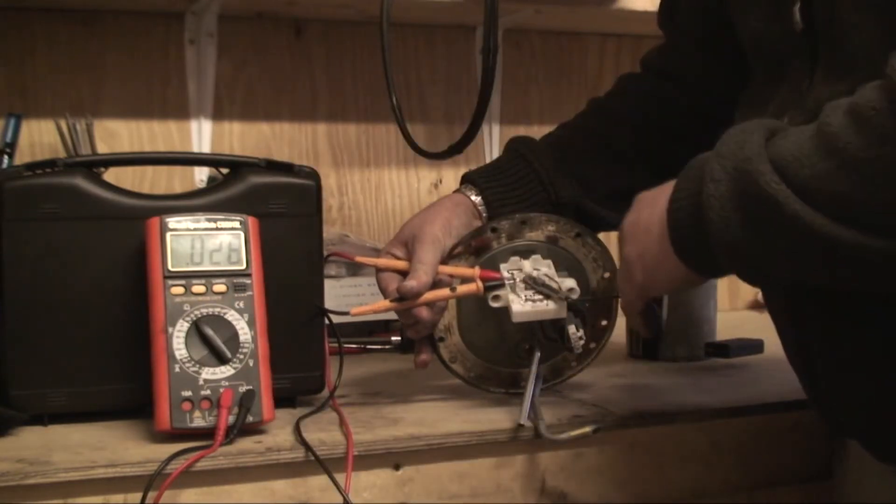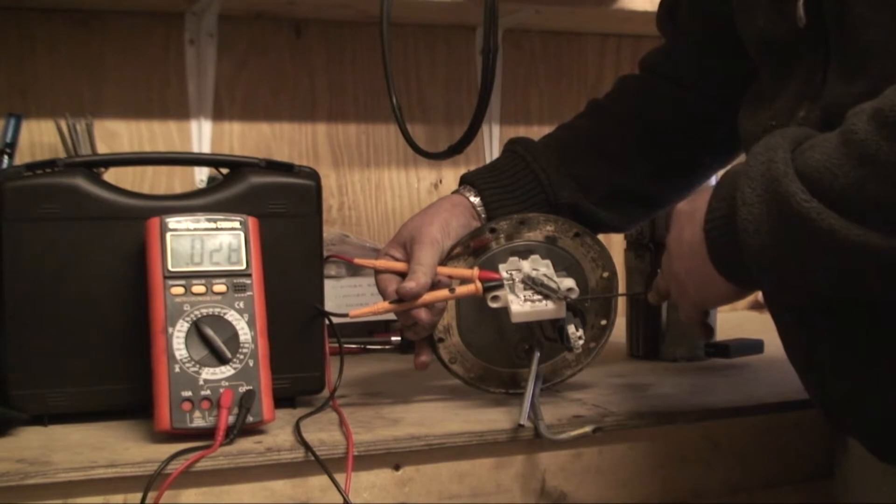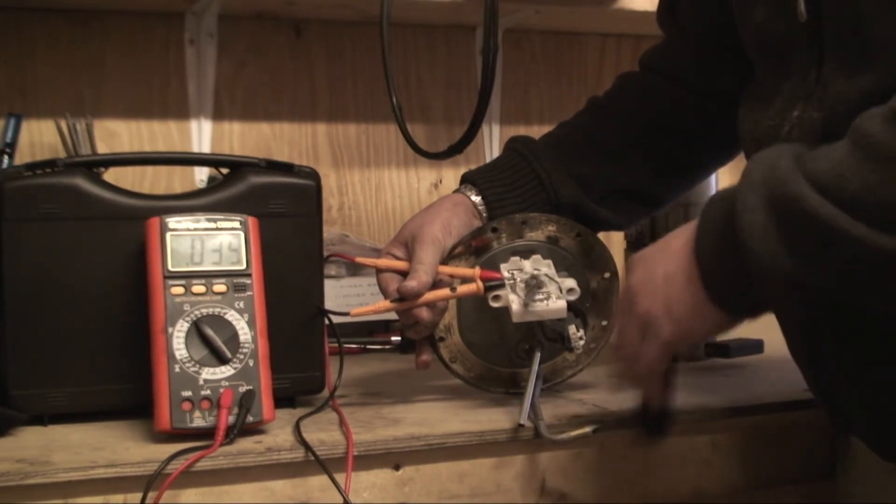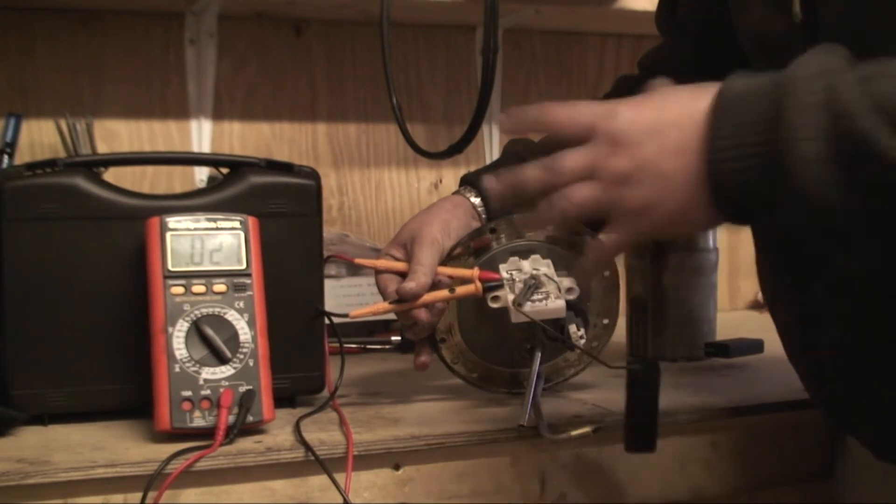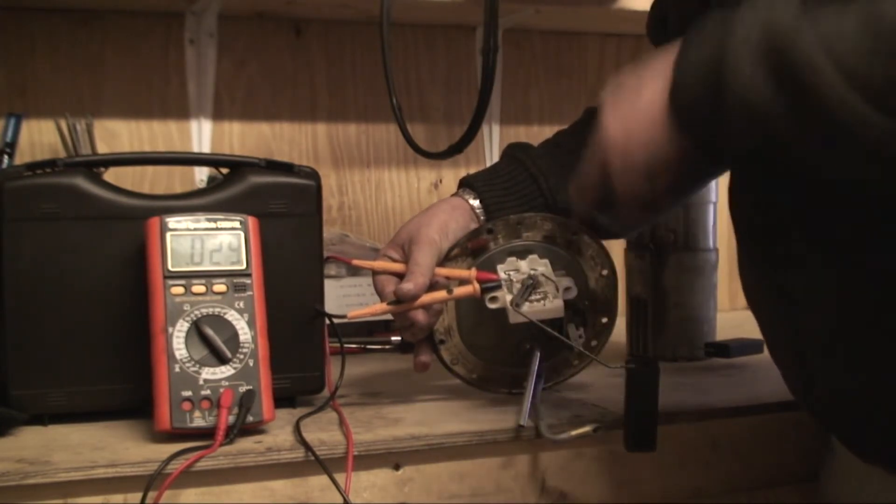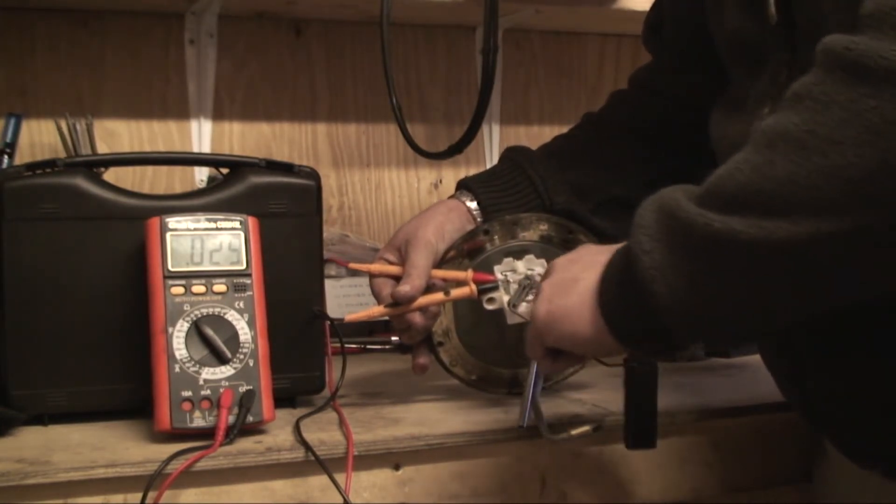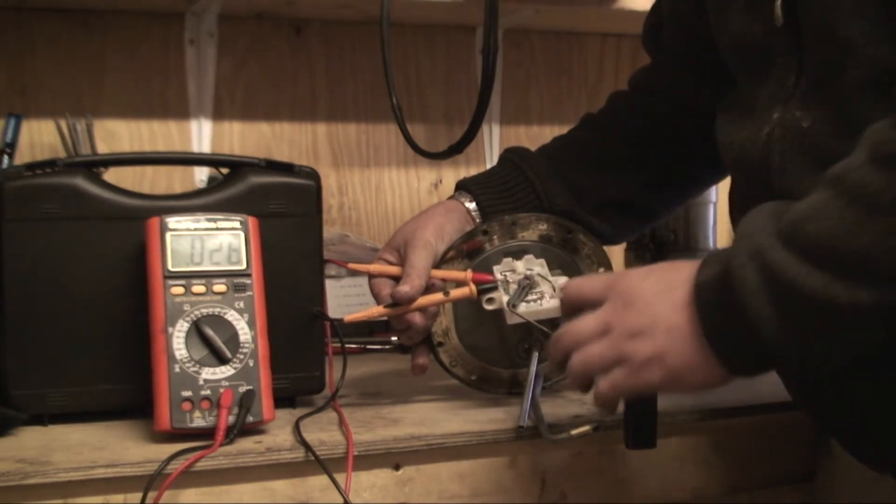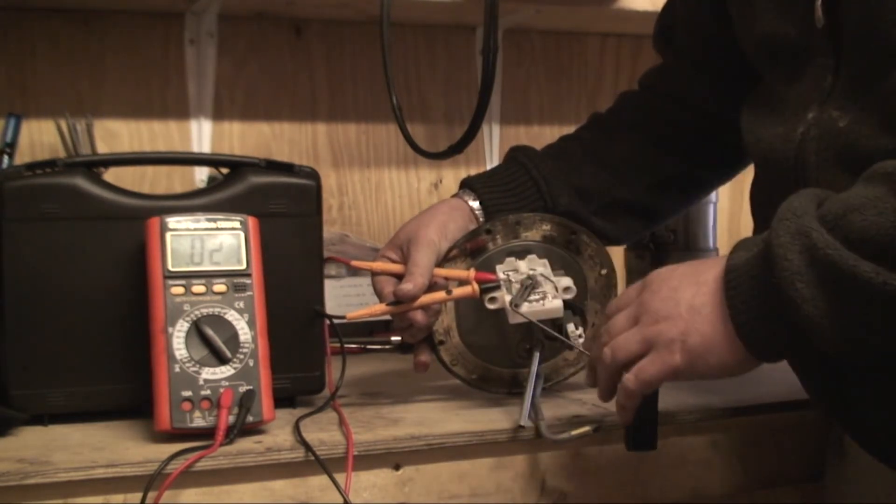See it's gone low there, that's low. So we now know this particular unit is faulty. And if you actually look really closely on the track where the little bar slides up and down, you can see where it's all worn away.